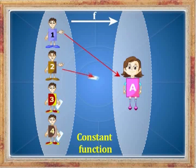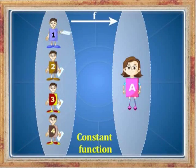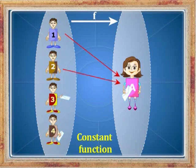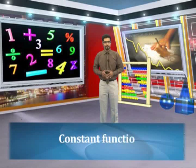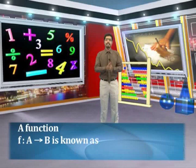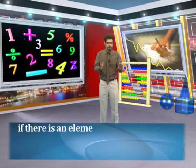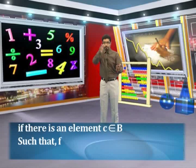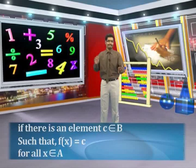If the image of all the elements of the domain is a constant or the same value, then this type of function is known as a constant function. For example, f of 1 equals a, f of 2 equals a, f of 3 equals a, f of 4 equals a, and so on. Constant function: a function f from A to B is known as a constant function if there is an element c in the set B such that f of x equals c for all x that belongs to A.